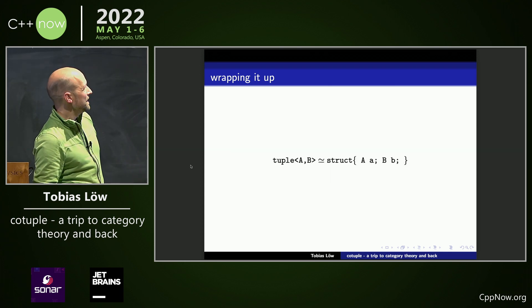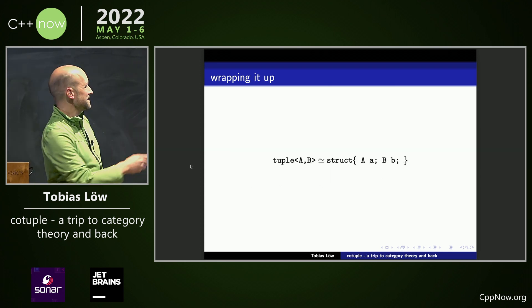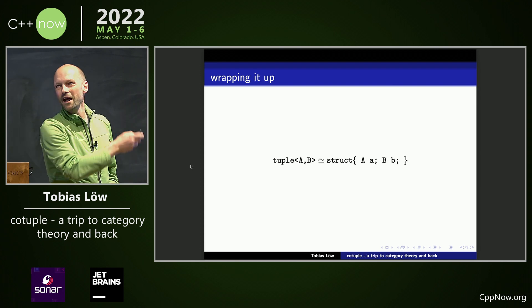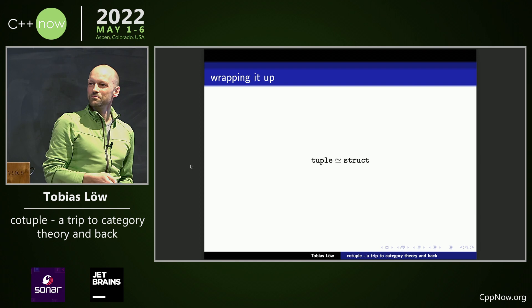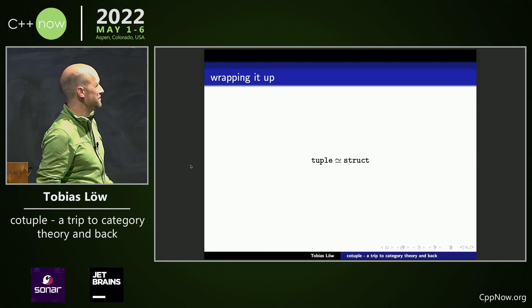Now, we know a tuple of A and B is nothing but a struct of A and B. They are isomorphic. So, in a sense, tuple is isomorphic to struct. Yeah, hand-waving here.